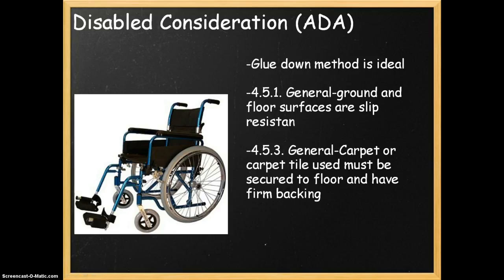There are two general ADA compliances, according to the Carpet and Rug Institute. The first is 451 General, which means that ground and floor surfaces are accessible, along with routes in accessible rooms and spaces. The second is 453 General, which means that if carpet or carpet tile is used on a ground or floor surface, it has to be securely attached, have a firm cushion or pad, and have a leveled loop so that nothing catches on it.